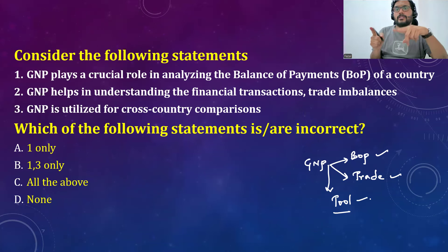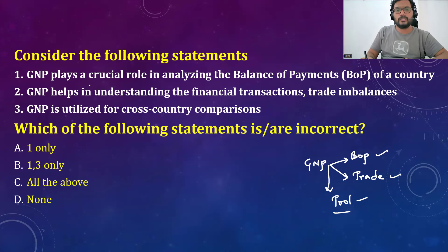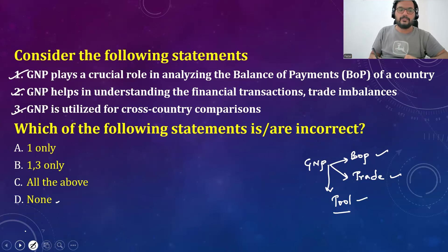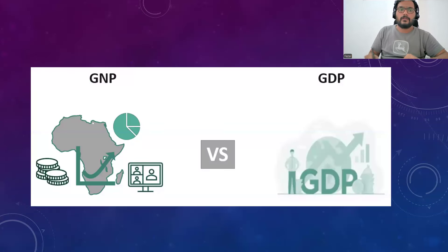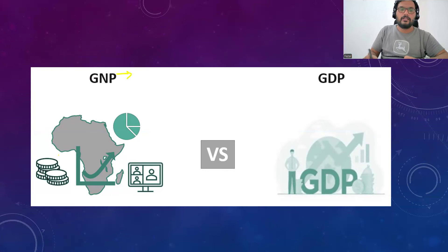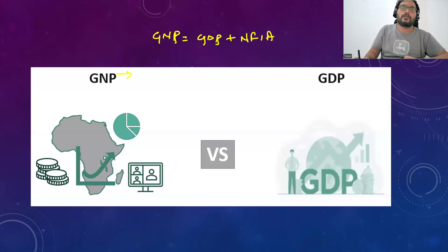Reading the question again: GNP plays a crucial role in analyzing the balance of payment — true. GNP helps in understanding financial transactions and trade imbalances — true. GNP is utilized for cross-country comparison — true. So the answer is all are correct. GNP is what you have earned from other countries. The formula: GNP = GDP + Net Factor Income from Abroad.